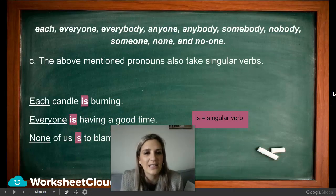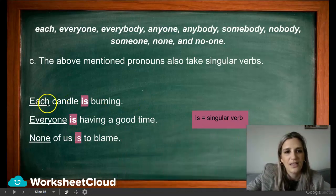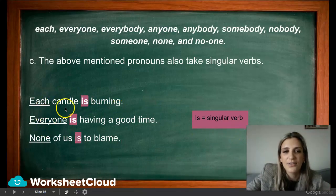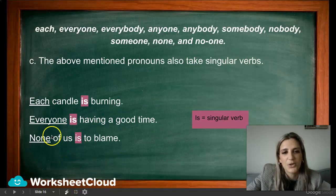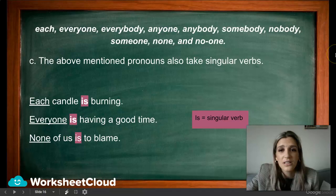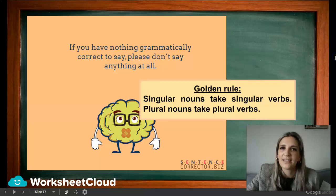Let's look at each, everyone, and none. 'Each candle is burning' — singular. 'Everyone is having a good time' — you would not say 'everyone are having a good time.' 'None of us is to blame' — because it is none. These are the rules. I know it seems overwhelming, but once you study it, you will start getting the hang of it.